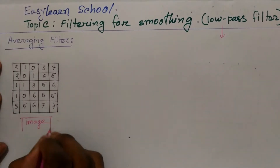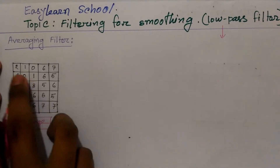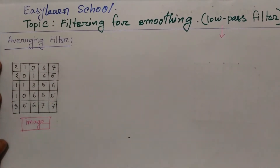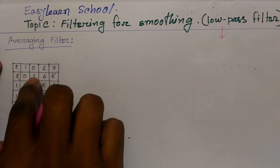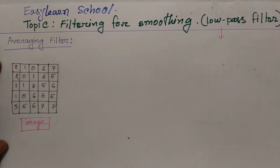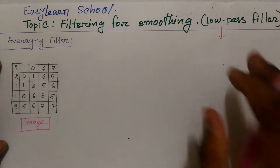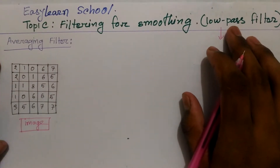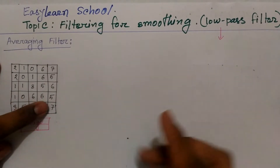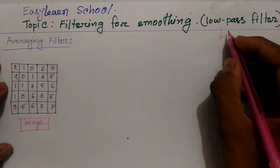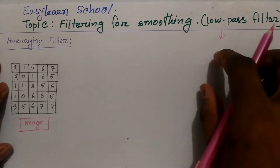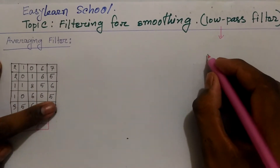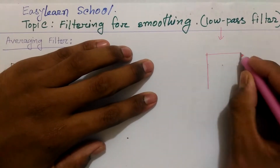Images are 2D matrices. This is the image matrix here. I will make a master's filter. Now we can use a master's filter — you can use the master's filter.